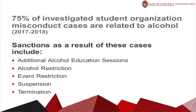Sanctions as a result of these violations include: additional alcohol education sessions for the organization and its members; alcohol restriction, meaning the organization cannot host events with alcohol; event restriction, meaning organizations cannot host events at all; suspension, which is a set amount of time that the organization is not a recognized student organization and cannot conduct normal business, events, or programs; and finally, termination, meaning the organization can no longer register or function as a group on campus.